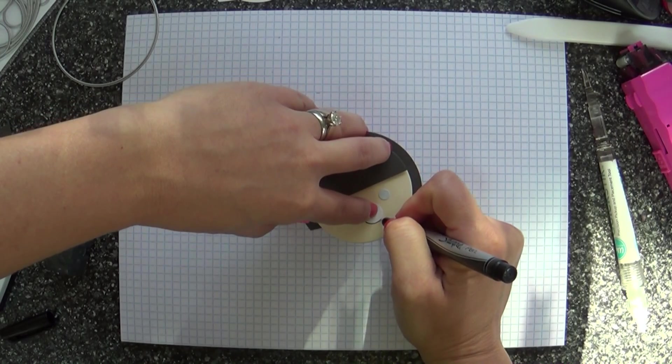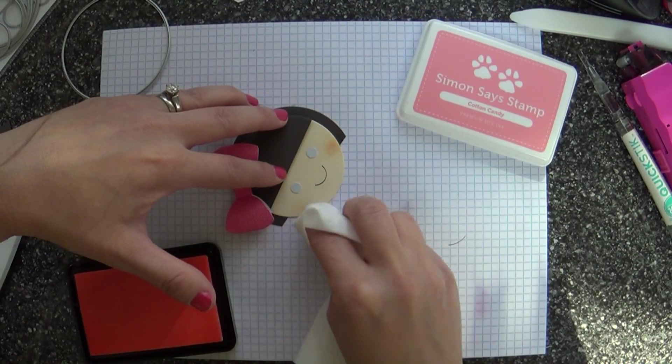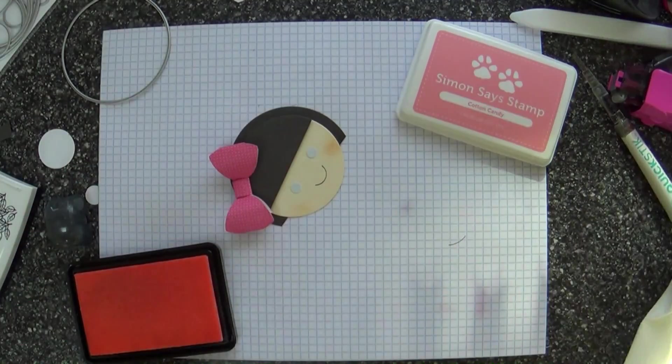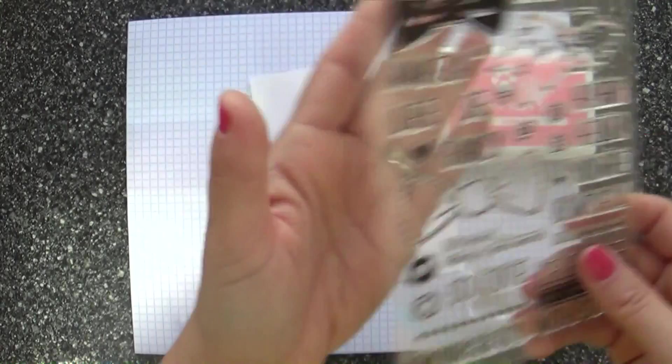And you could totally just freehand the smile. You do not need to do that. But you know, I'm like perfectionist. So then I took a paper towel and I just dabbed it in some of that cotton candy to just give her a little rosy cheeks.